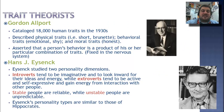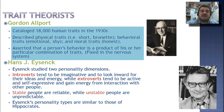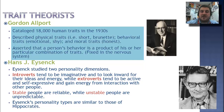Allport and Eysenck are the more modern trait theorists. In the 1930s, Allport cataloged 18,000 human traits. He described physical traits, behavioral traits, and moral traits — physical traits like short, tall, brunette, blonde; behavioral traits such as emotional, shy, angry, frustrated; and moral traits like honest and upstanding. Allport asserted through his research that a person's behavior is a product of his or her individual combination of traits that are fixed in the nervous system and cannot be changed.